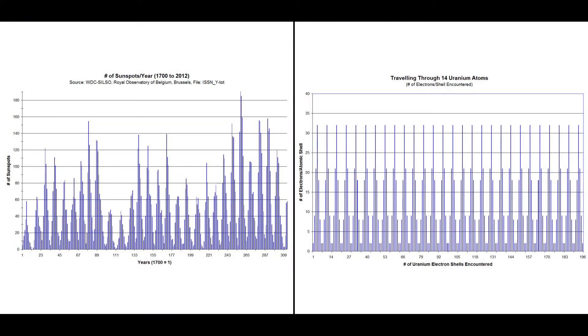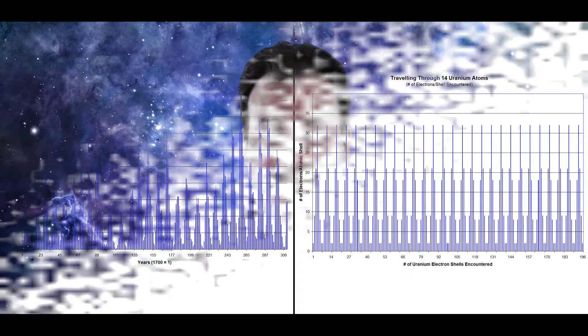A plot of the number of electrons per uranium shell for a series of uranium atoms is strikingly similar to a plot of the number of sunspots per year for the past 300 years. Could it be that simple? Let us ask solar physicist Dr. De Toma of the High Altitude Observatory to look into this for us.